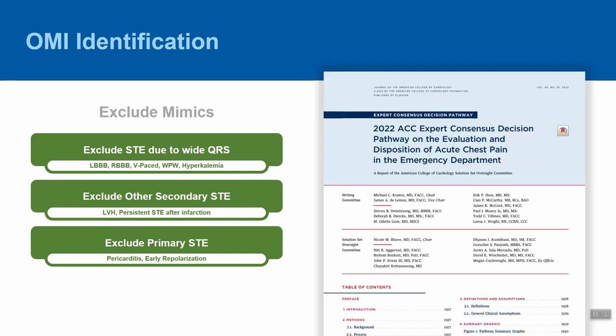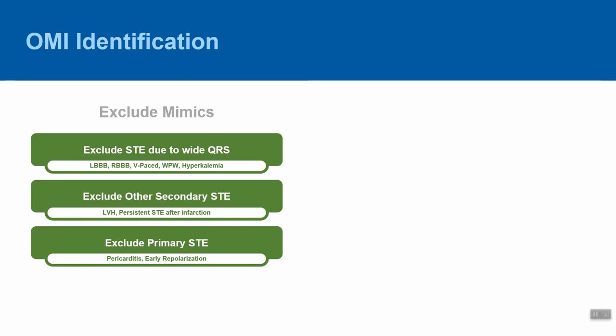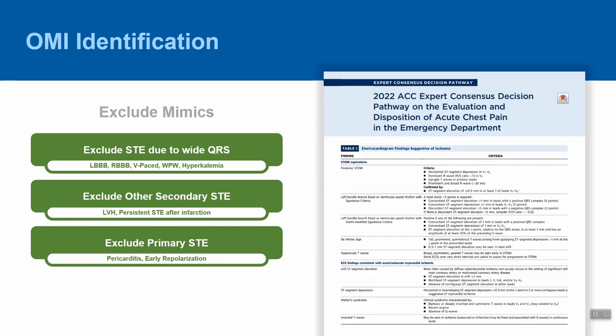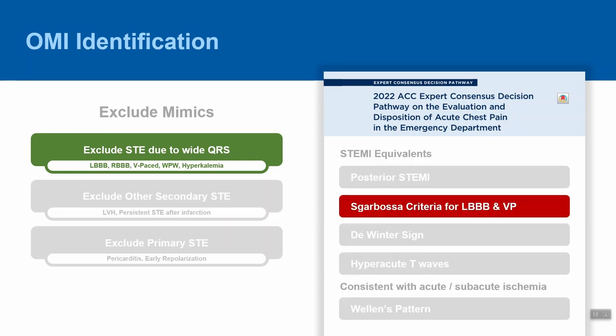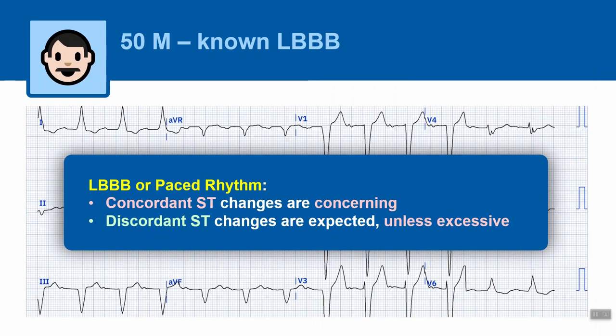We expect ST elevation in the presence of left bundle branch block or a ventricular paced rhythm. Applying the Sgarbossa or Smith-modified Sgarbossa criteria can help determine whether there is an occluded coronary artery hiding beneath the expected ST elevation. The 2022 ACC expert consensus decision pathway now recognizes this as a STEMI equivalent. In short, concordant ST changes — either elevations or depressions — are concerning, while discordant changes are expected unless they are excessive.